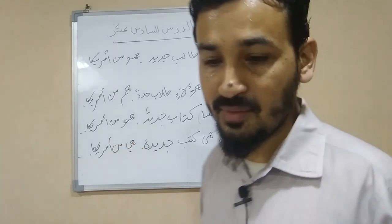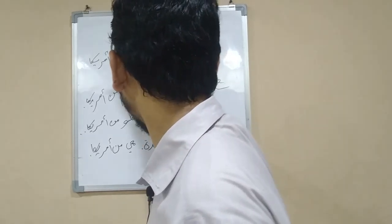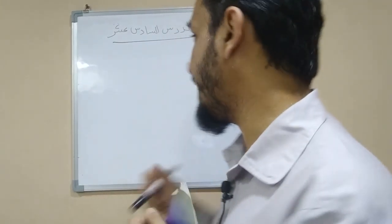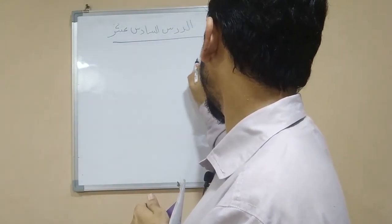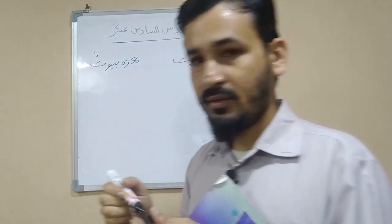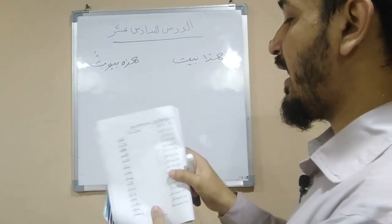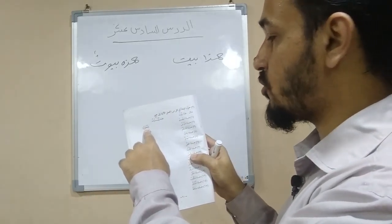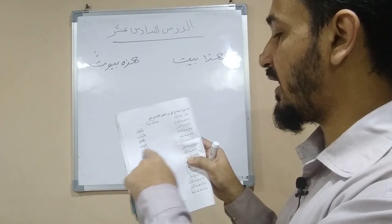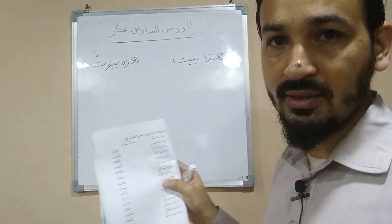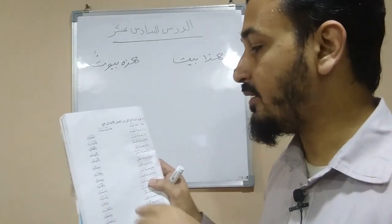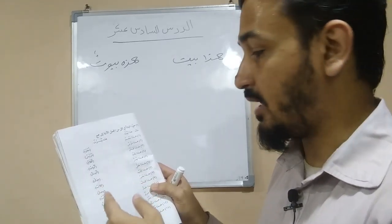So: 'hadha' becomes 'ha'ula'i,' 'talib' becomes 'tullab,' 'jadid' becomes 'judud,' 'huwa' becomes 'hum min Amerika.' And for the second example: 'hadha kitabun jadid' becomes 'hadhihi kutubun jadida wa hiya min Amerika.' That was exercise number one — very easy. Now we have exercise number two. 'Hadha qalam' — and its plural is 'hadhihi aqlam.'